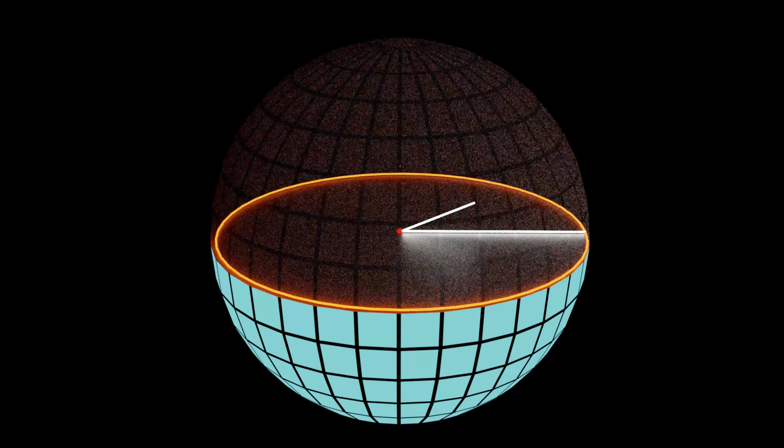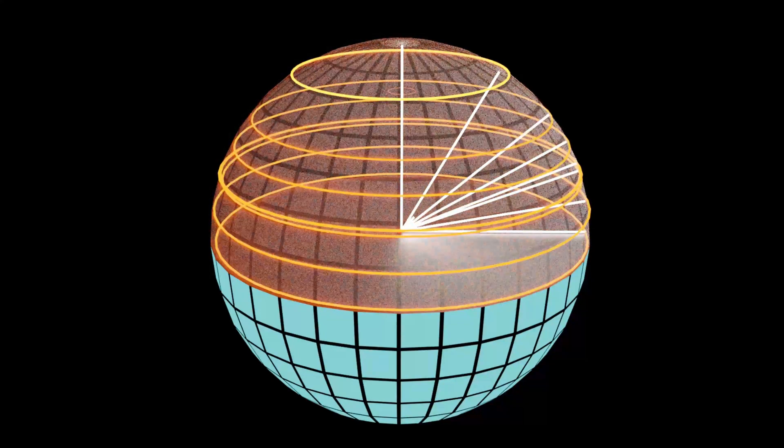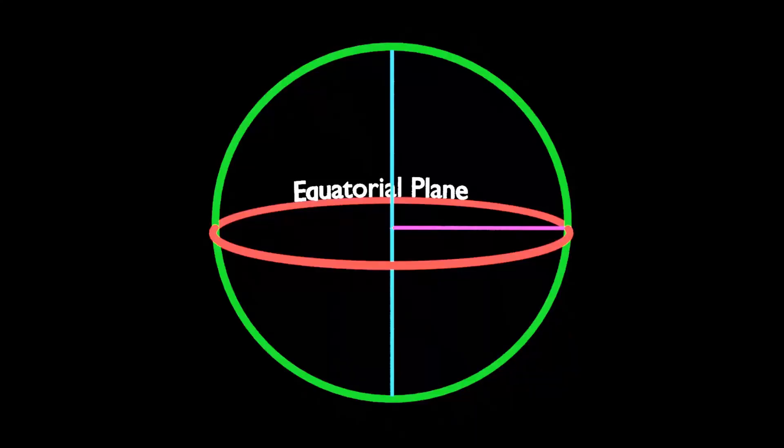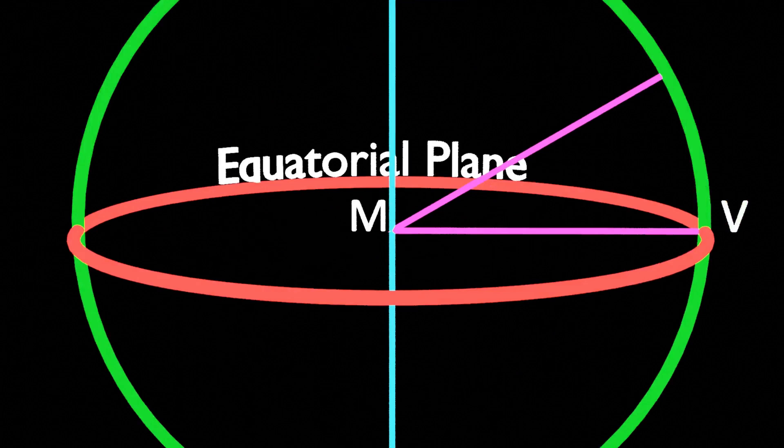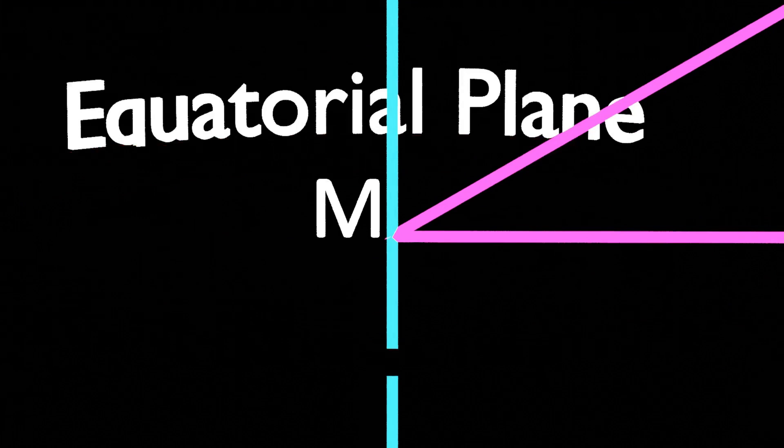The location of any place on the earth is determined with reference to the center of the earth. In order to do it, we consider a straight line joining the point on the surface and the center of the earth. At the center, it makes an angle with the plane of the equator. The measure of this angle is used in determining the location.